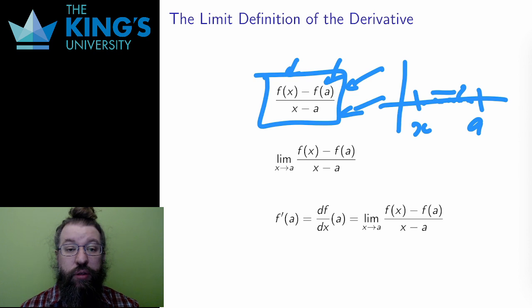Therefore, I can ask for the limit. As x gets closer and closer to a, what happens to the slope, this ratio f(x) minus f(a) over x minus a?